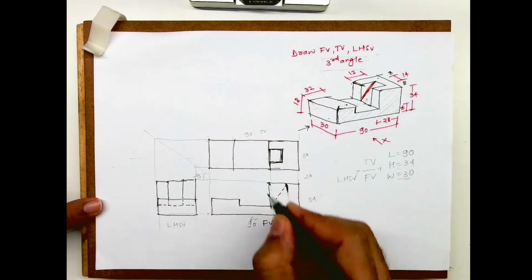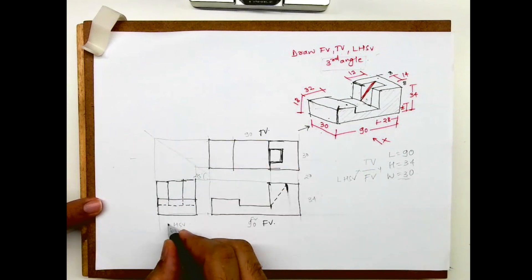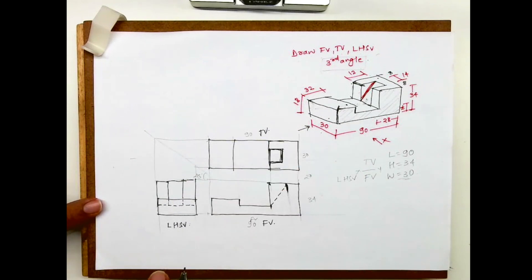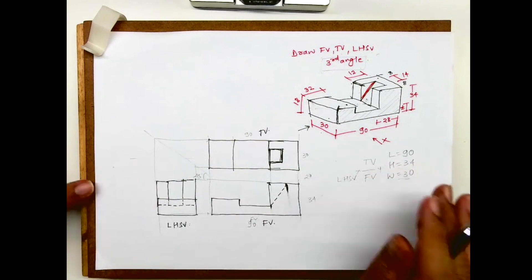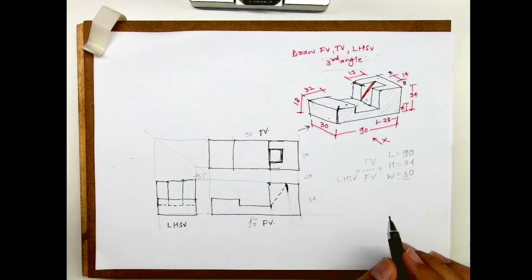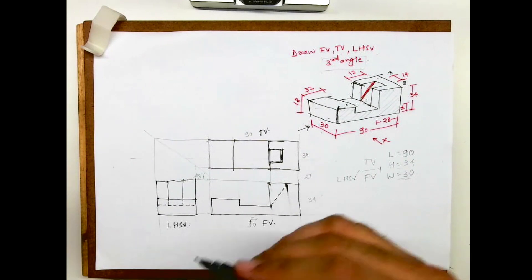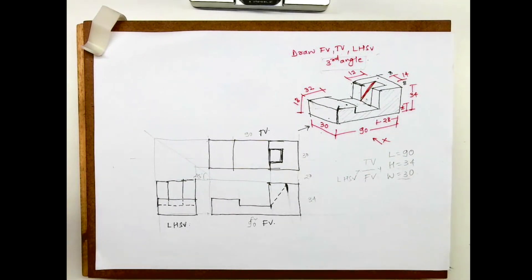So this is how the front view, top view, and left-hand side view will appear. What I've done is rough — I want you to do it fair. This is for Jamrabai students who have an exam on Monday; they have orthographic, so I just thought this can help you. Thank you.